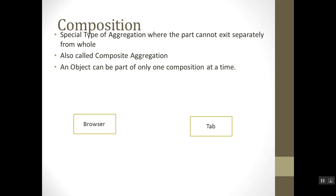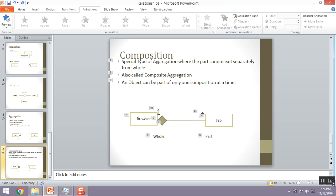A Google Chrome tab cannot exist without the Google Chrome software. This is the best example to illustrate composition. The browser is the whole and the tab is the part. It is also a one-to-many relationship — one browser can have many tabs. Thank you for watching. Please subscribe to this channel. We will meet in the next video covering dependency and other relationships.